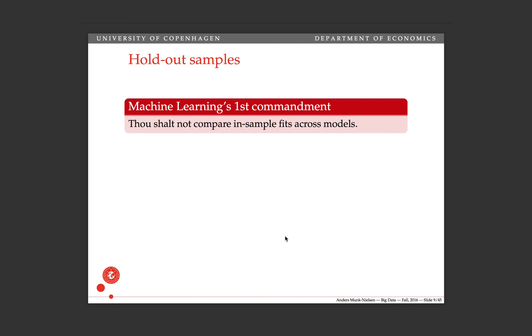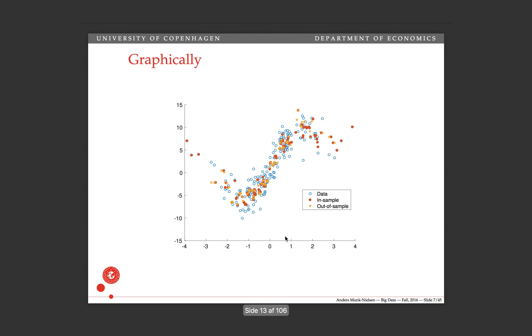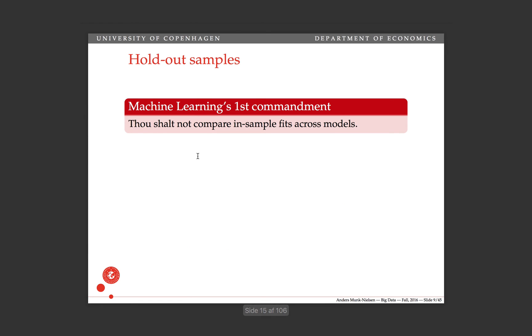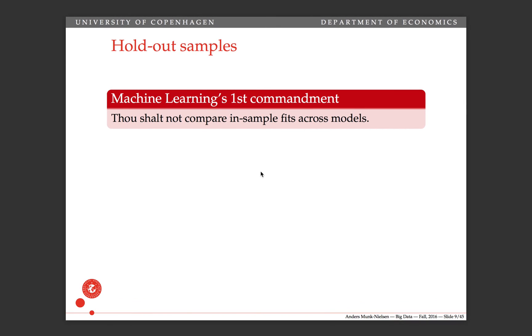So holdout samples, that's a different thing from cross validation. And it follows from this, what I'll call the first commandment of machine learning: thou shalt not compare in-sample fits across models. So in-sample fits, that's when we compare the red dots, which are spot on top of the blue dot on the data. So there's a very small in-sample error. So in general, when you're comparing different models and you want to compare their fit, you never want to compare them in-sample. Instead, you want to use what's called a holdout sample. That's how people refer to it.